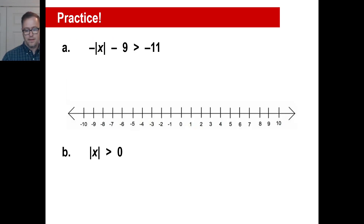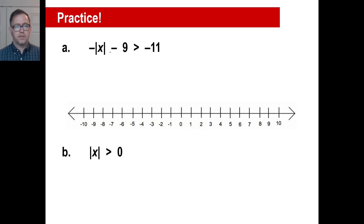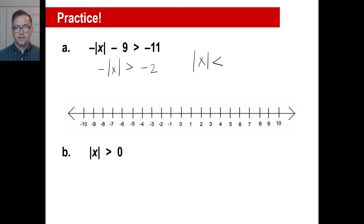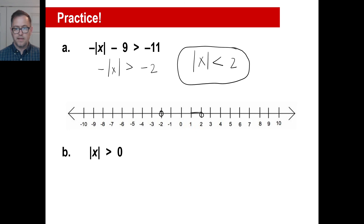We'll try these two practice problems. Okie doke — let's try A first. This is not one of those funky ones where you move stuff around. The nine goes over here and we get: negative absolute value of x is greater than negative eleven plus nine, which is negative two. So we rearrange that — it's going to be positive absolute value less than positive two. Everything has to be less than two. It won't include negative two or two, but everything inside there.